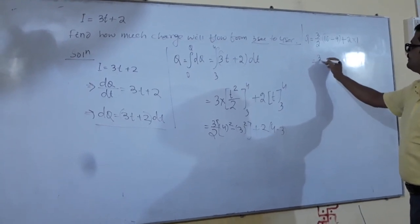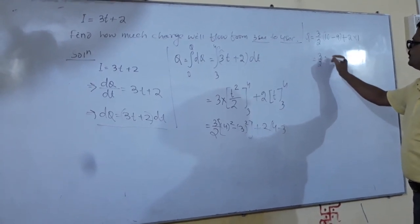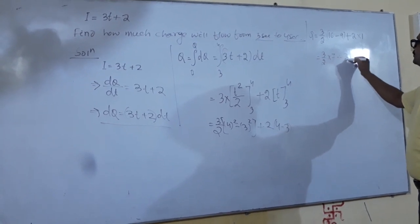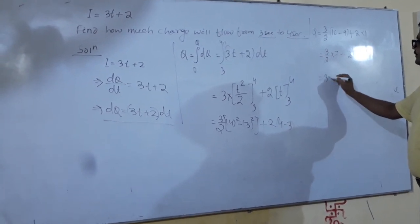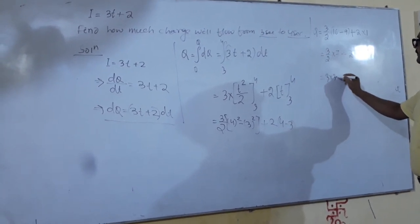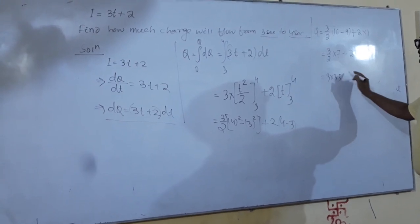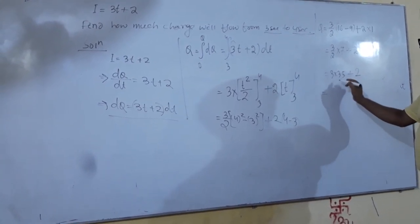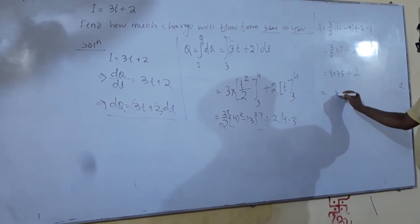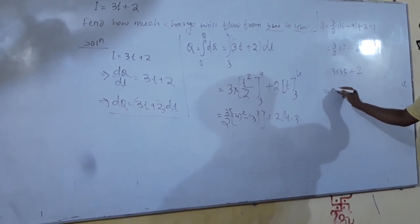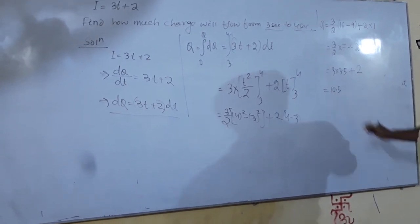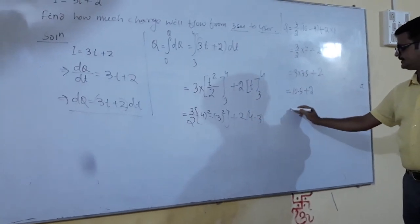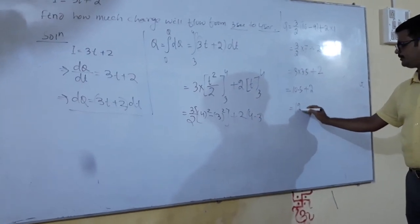So q equals 3 by 2 into (16 minus 9) plus 2 into 1, which is 3 by 2 into 7 plus 2, equals 3 into 3.5 plus 2, equals 10.5 plus 2, which gives 12.5 coulombs.